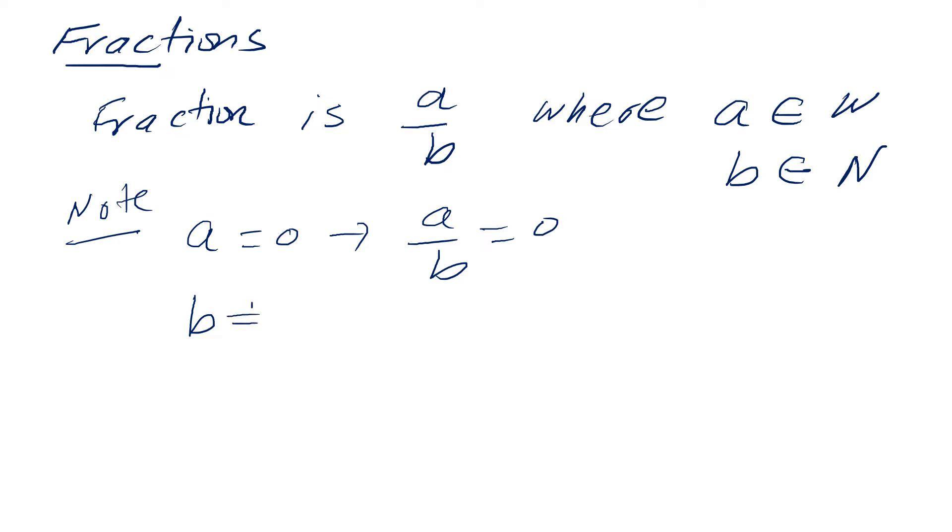However, b cannot be 0 because natural numbers or counting numbers don't include 0 in the set. So a over 0 is undefined. And this is going to be helpful in solving equations or finding asymptotes and stuff. So this is kind of the first idea.